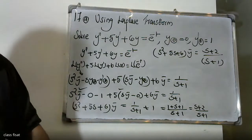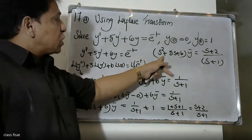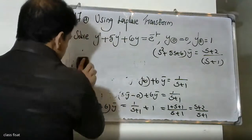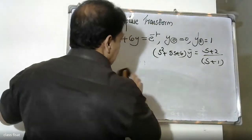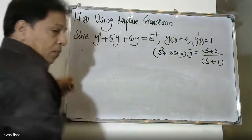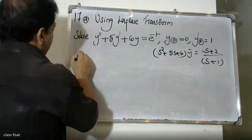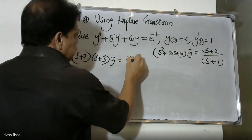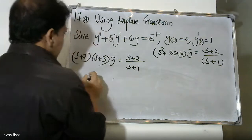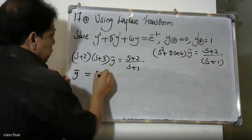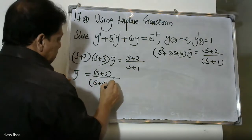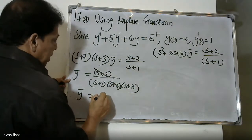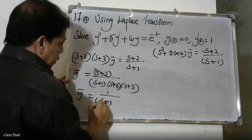So s squared Y_bar plus 5s plus 6 into Y_bar is equal to s plus 2 divided by s plus 2 divided by s plus 1. Then s squared plus 5s plus 6 factors as s plus 2 into s plus 3. Therefore Y_bar is equal to 1 by (s plus 1) into (s plus 3).